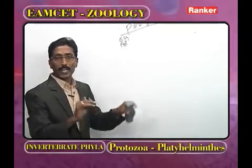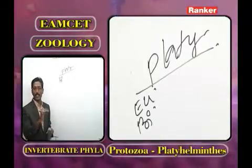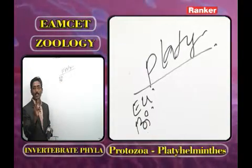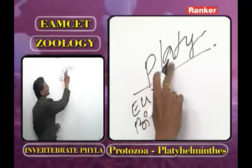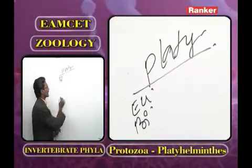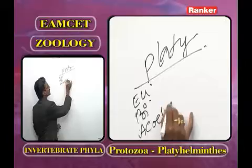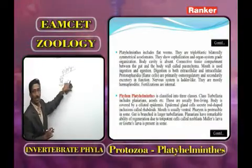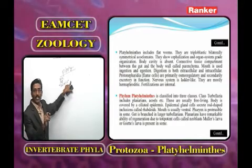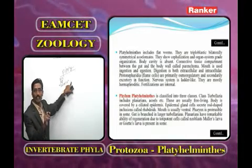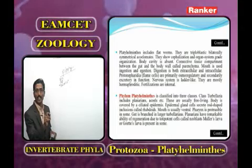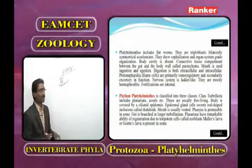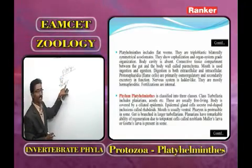The important character of Platyhelminthes is the absence of coelom — called acoelomate. Protozoa: unicellular. Porifera: canal system (aquiferous system). Cnidaria: gastrovascular cavity. Platyhelminthes: acoelomate — coelom is totally absent.